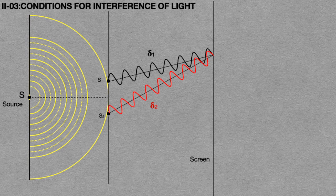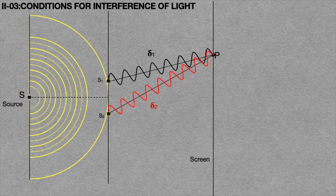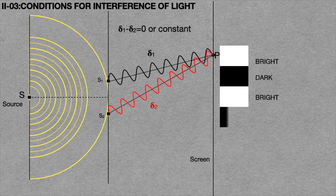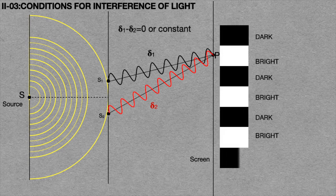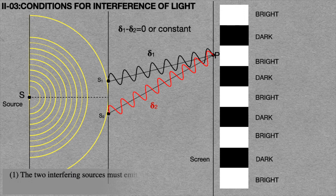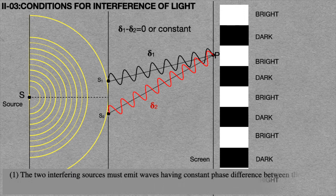If these two light waves are superposed and form an interference pattern at point P on the screen, then it must satisfy the condition: delta 1 minus delta 2 is equal to zero. The phase difference should be constant — that means the light waves must have a constant or zero phase difference between them for a stable interference pattern to form. The two interfering sources must emit waves having constant phase difference between them.